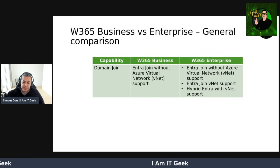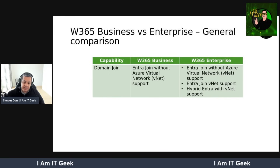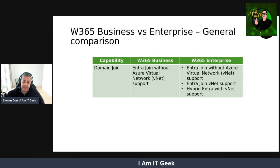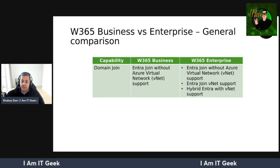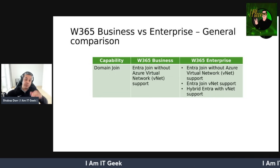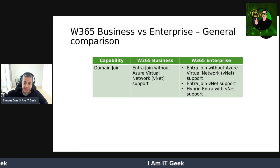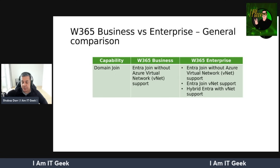Let's start talking about general comparison. The first capability I want to talk about is domain join. When it comes to Windows 365 Business, Entra join without Azure Virtual Network (VNet) is supported, and that's kind of what I've got in place. When it comes to Windows 365 Enterprise, that same capability is supported without the virtual network, but also Entra join with VNet support and hybrid Entra join with VNet support as well. So being able to join to a domain controller and your on-premise domain — Entra is fully supported in Enterprise. A lot more capability and features for the domain join capability.